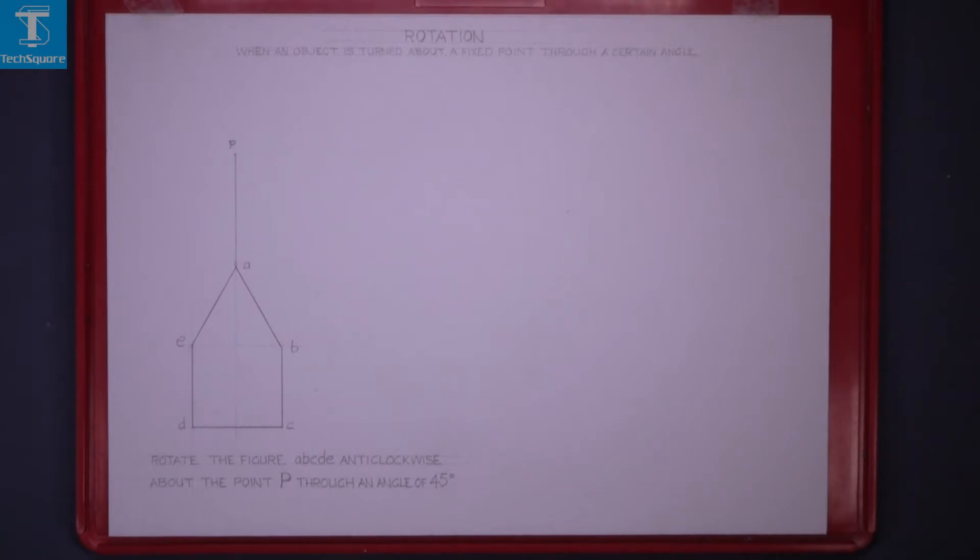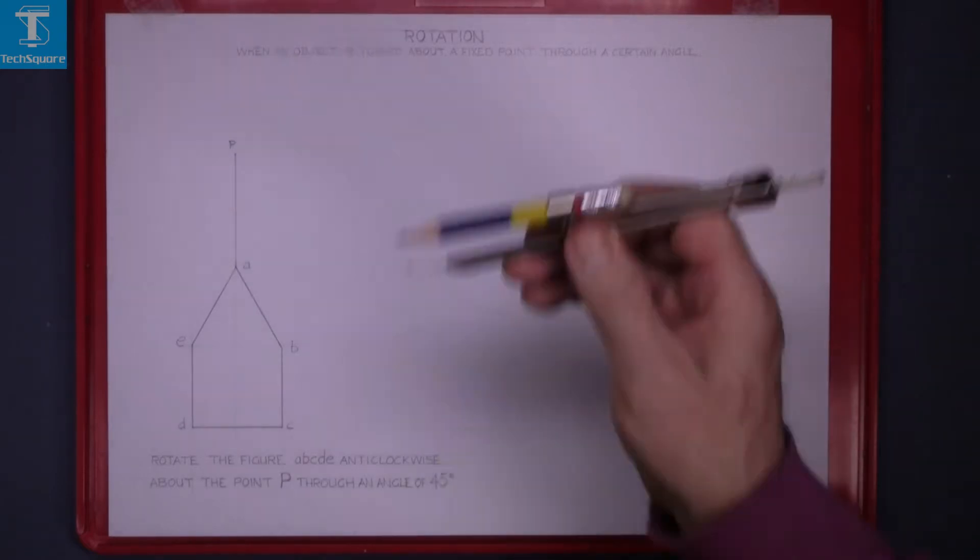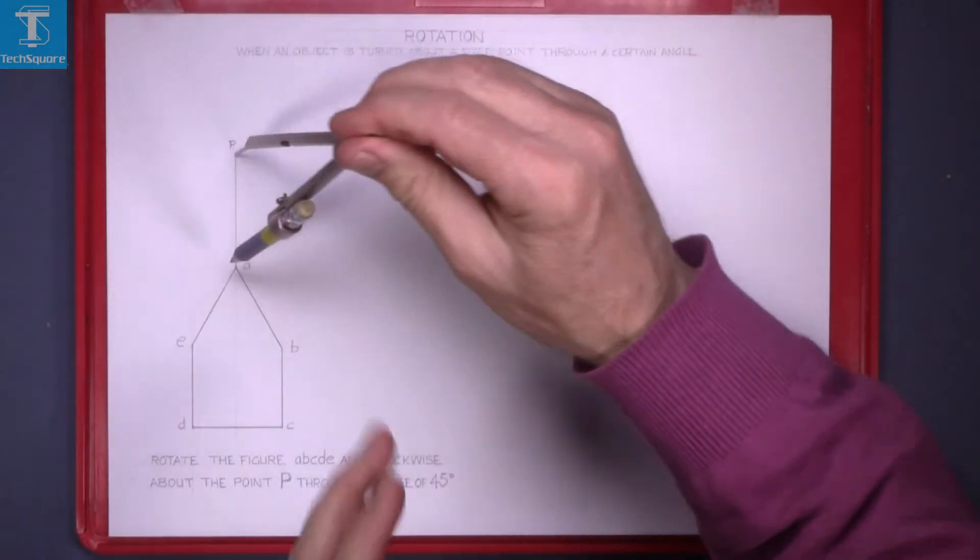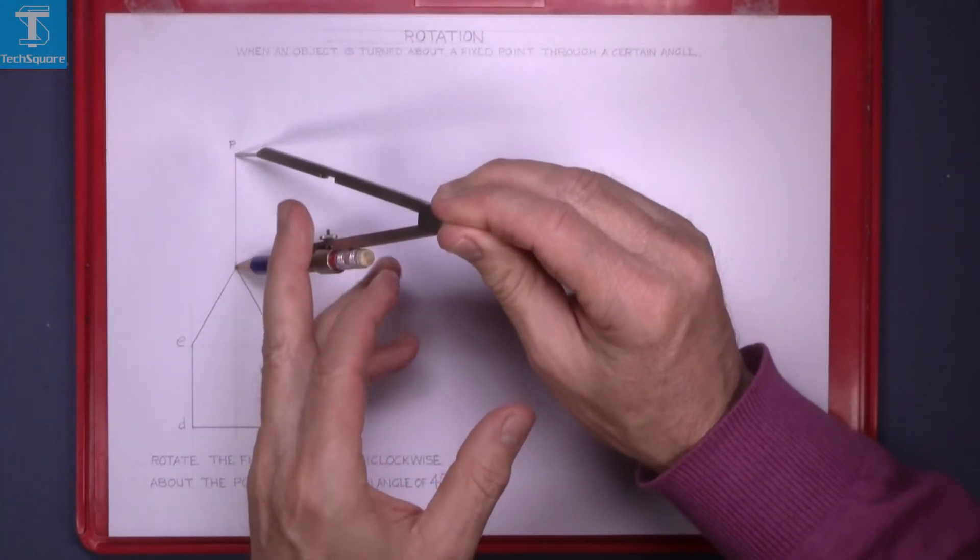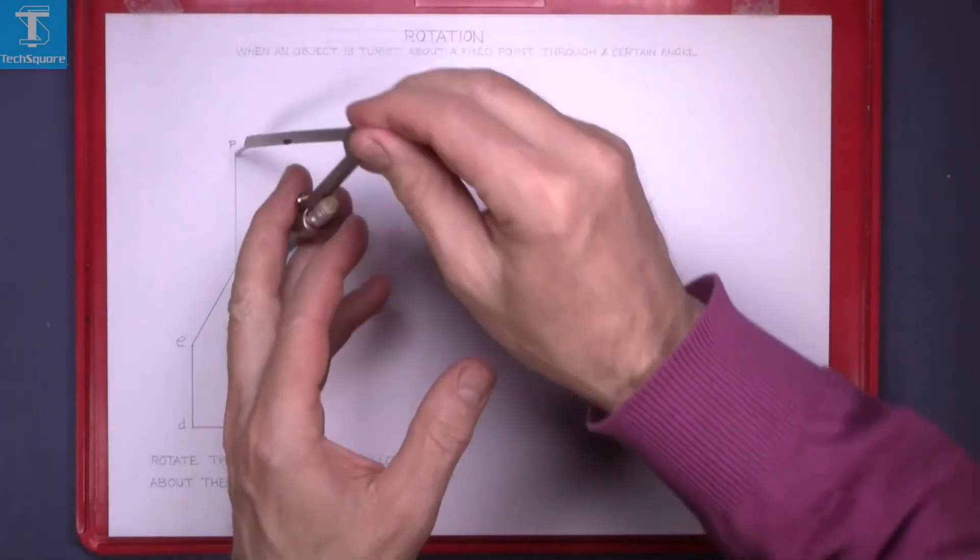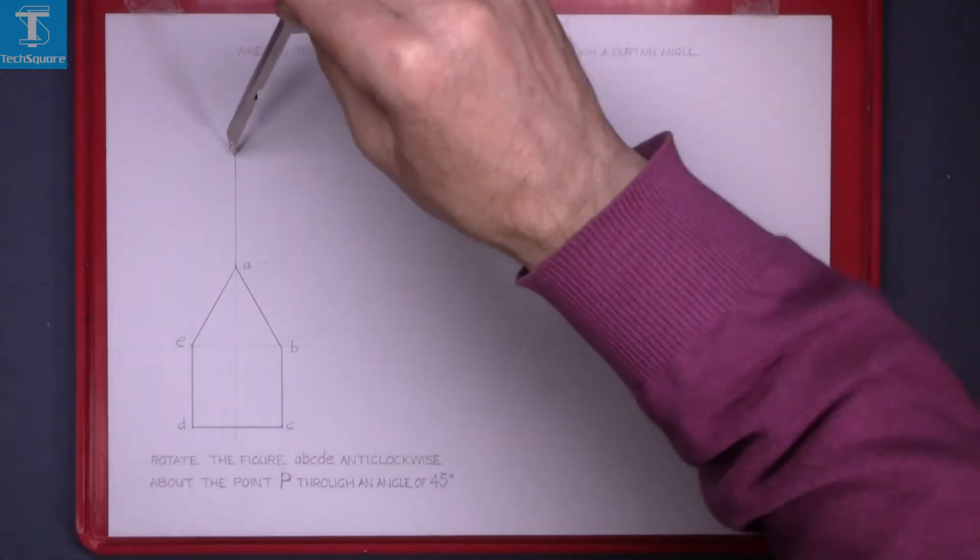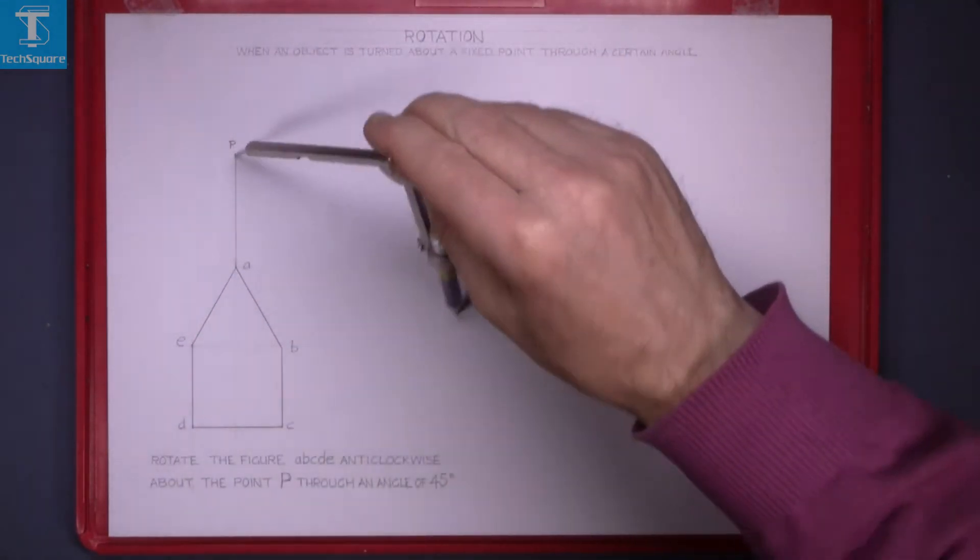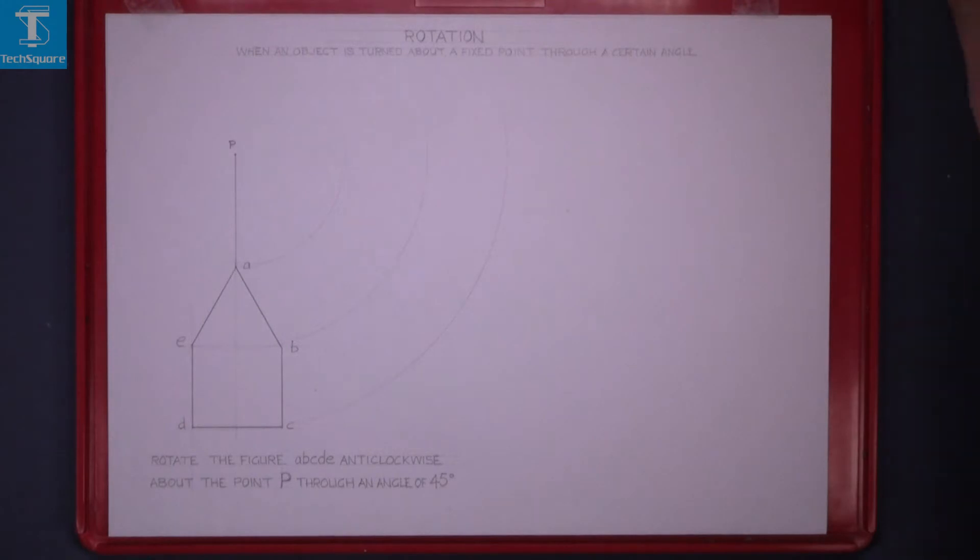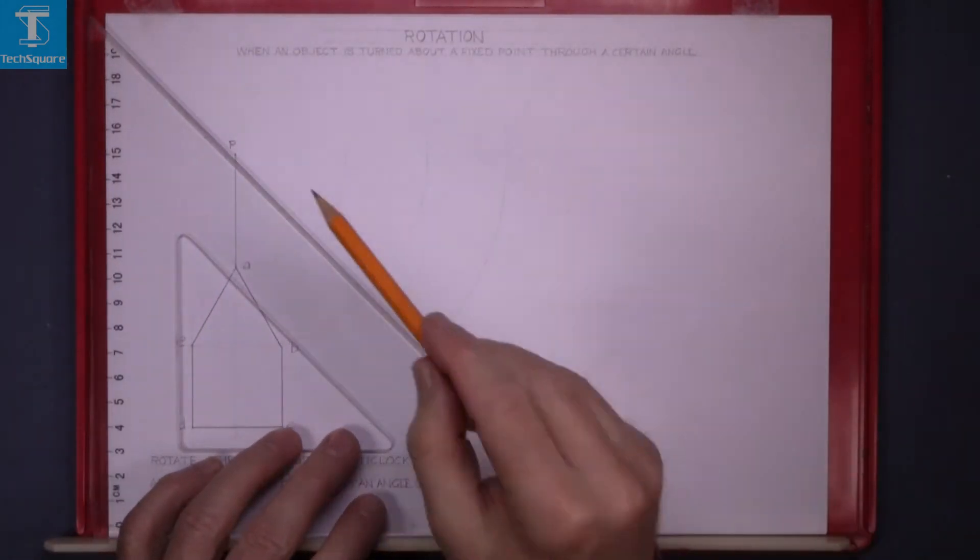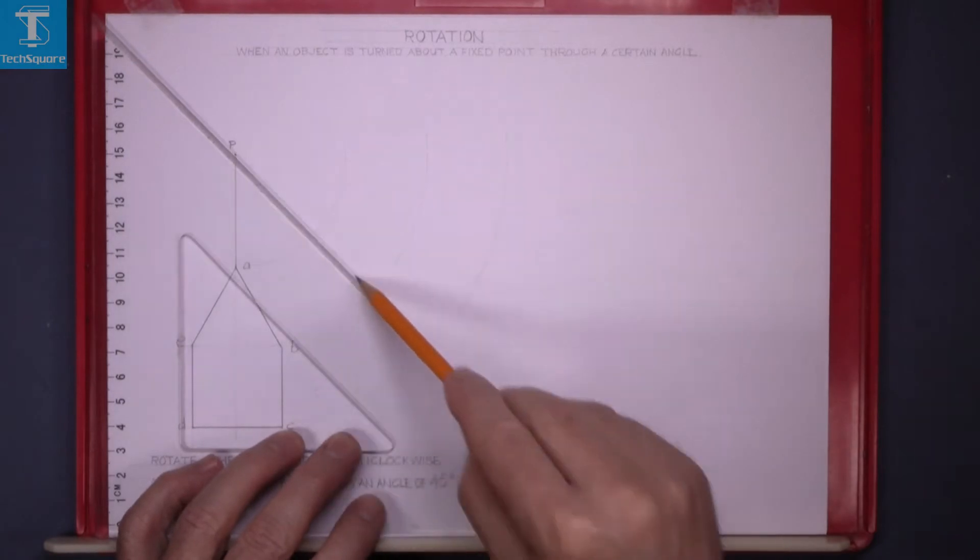The first thing we will do is put the point of the compass in P and rotate each point anti-clockwise. Next thing then is to go down at 45 degrees and that's the centre of the new figure.